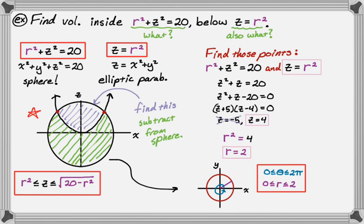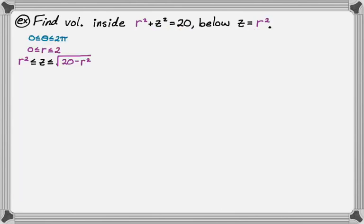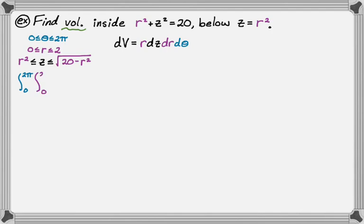Since we're finding volume, we compute the triple integral of dV, where dV equals r dz dr d theta. Since z depends on r but r and theta are constant with respect to each other, the order dz dr d theta works well. The integral is: integral from 0 to 2pi, 0 to 2, r squared to radical 20 minus r squared, of r dz dr d theta.